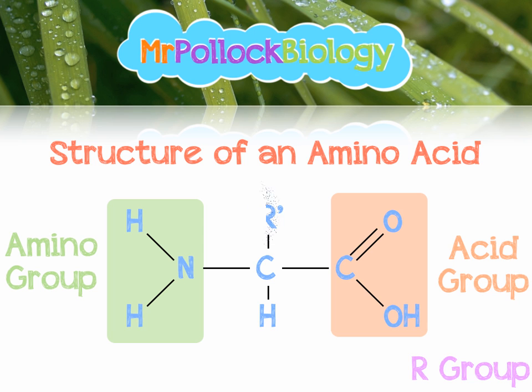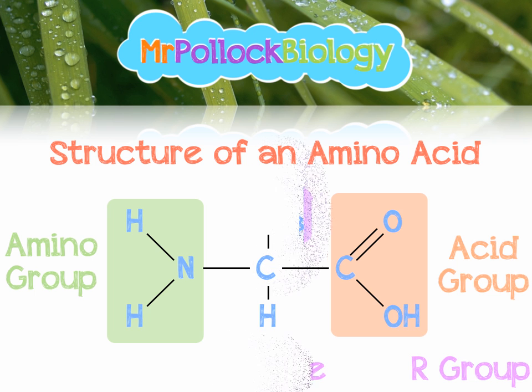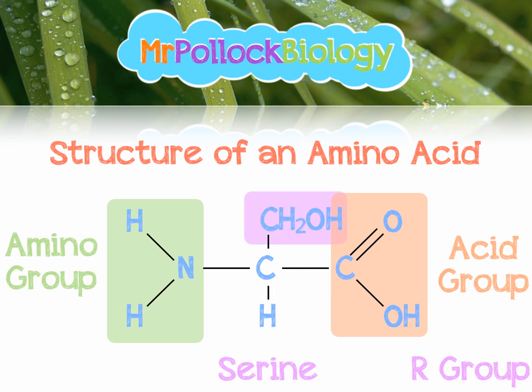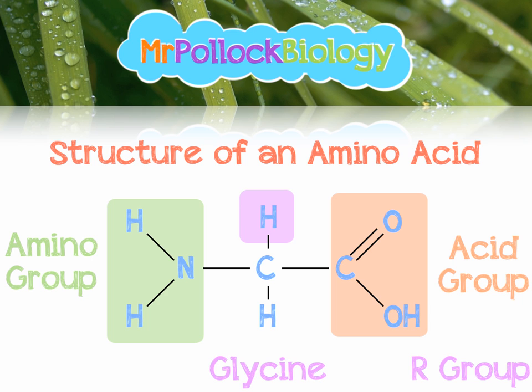The R group can change. In the case of alanine, we have CH3. In the case of serine, we have a methanol group, CH2OH. And in the case of glycine, we have a hydrogen. So this R group is the only variable region. Some of those R groups contain sulfur, which we'll see the importance of later. But for the most part, all proteins contain carbon, hydrogen, oxygen, and nitrogen. If you see nitrogen in a molecule, chances are it's a protein.